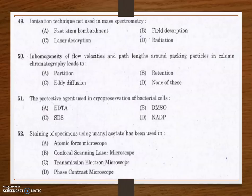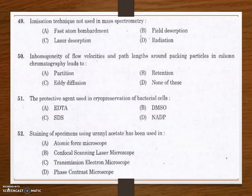Next question: staining of specimens using uranyl acetate has been used in — atomic force microscope, confocal scanning laser microscope, transmission electron microscope, or phase contrast microscope. The answer is transmission electron microscope. Uranyl acetate is a negative stain used in electron microscopy; it is simple and quick to perform, allowing examination of samples within minutes after staining.